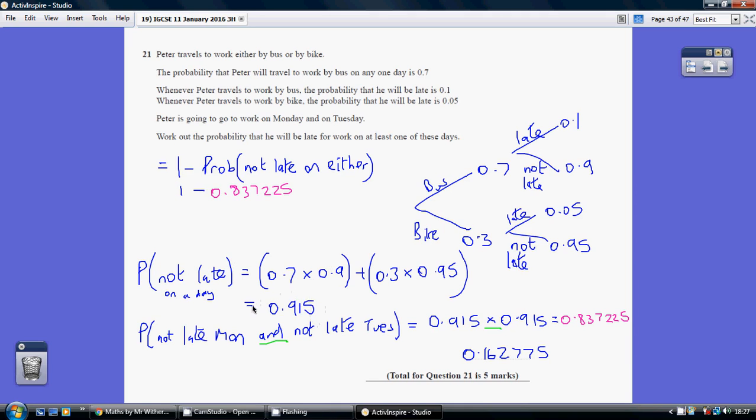So, what's the probability that he's not late on Monday and not late on Tuesday? Well, it's 0.915 times 0.915. So, for him not to be late on either is 0.837225.